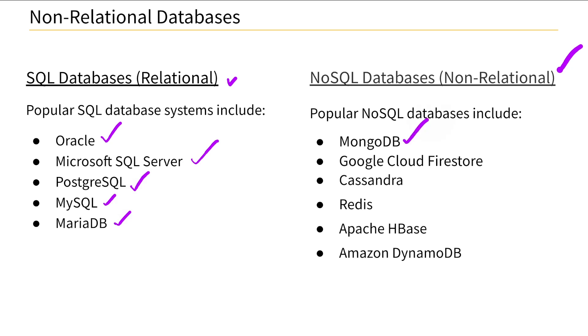Now let's look at some popular NoSQL databases. MongoDB is very popular, and Firestore is Google Cloud's version, and then we have Cassandra, Redis, Apache HBase, and DynamoDB, which is part of Amazon. We talked about how that's a key value store, and so that's something we've already covered.